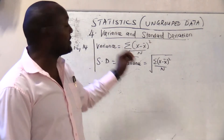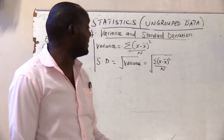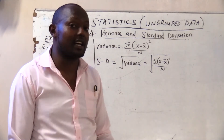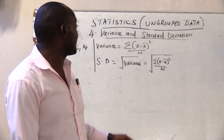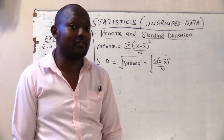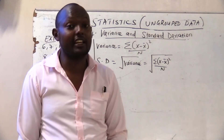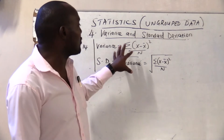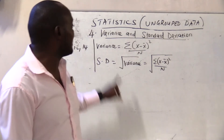In the first video you looked at mean, mean deviation and coefficient of mean deviation. In the second video you looked at range, mode and coefficient of range. In the third video we looked at median, quartiles, quartile deviation, and coefficient of quartile deviation. So today we are looking at variance and standard deviation.